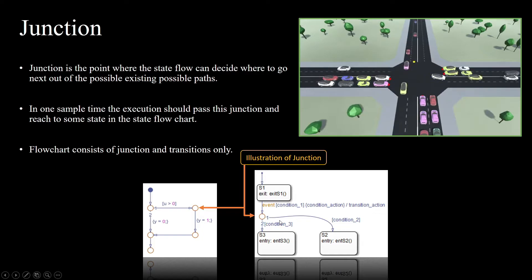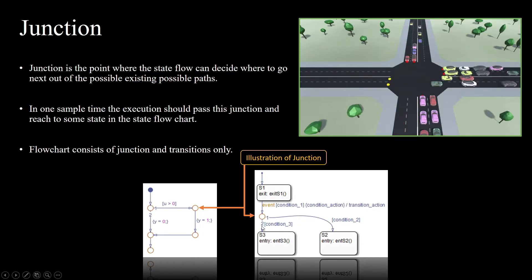When both conditions are satisfied, it will try to choose the lowest priority path. If only one condition is satisfied — suppose the first condition — then that particular transition will happen. If the first is not satisfied and the second is satisfied, then it will go along the second path.